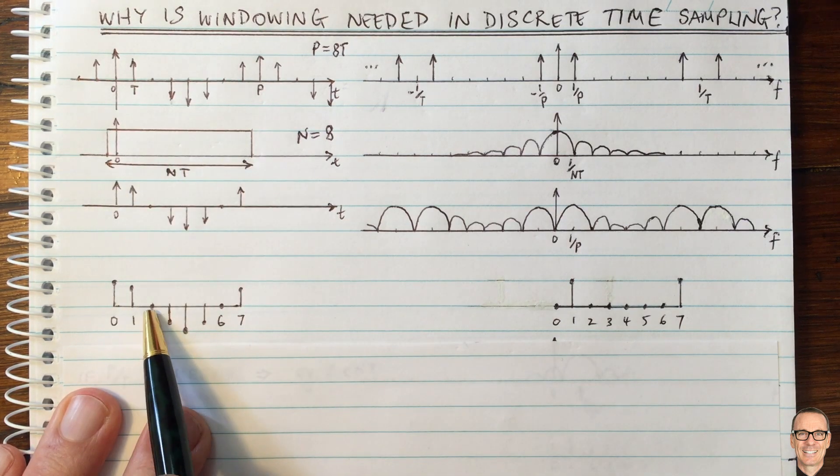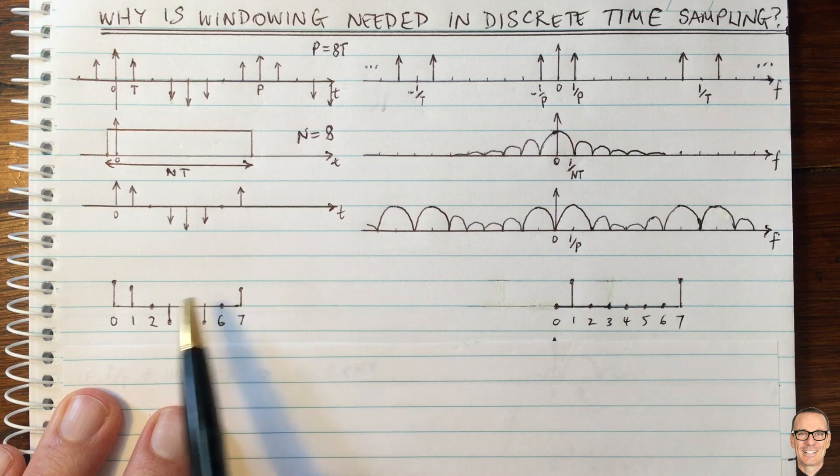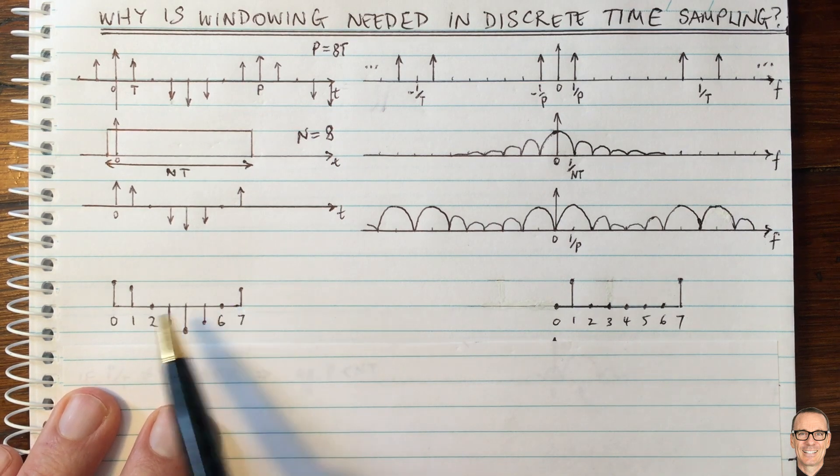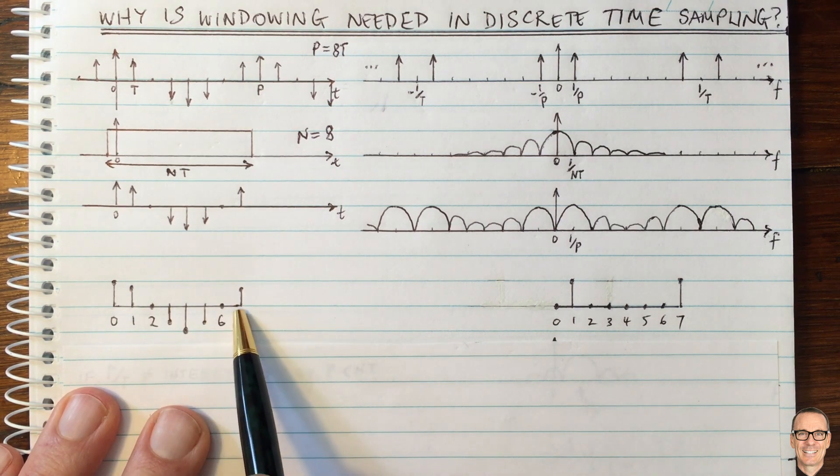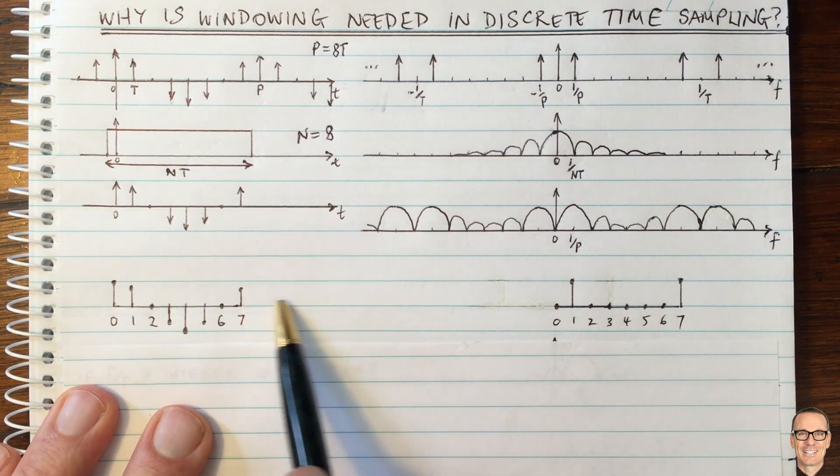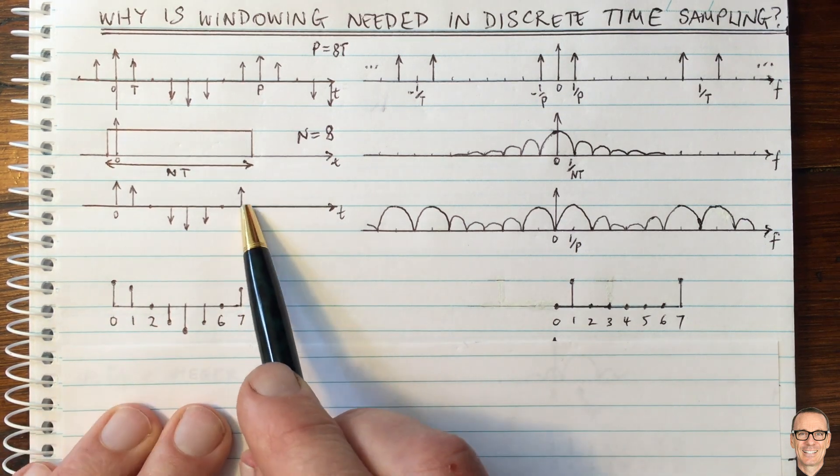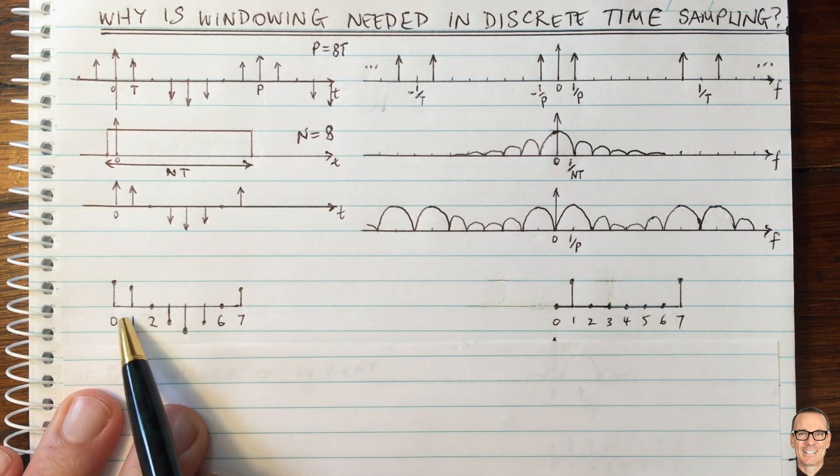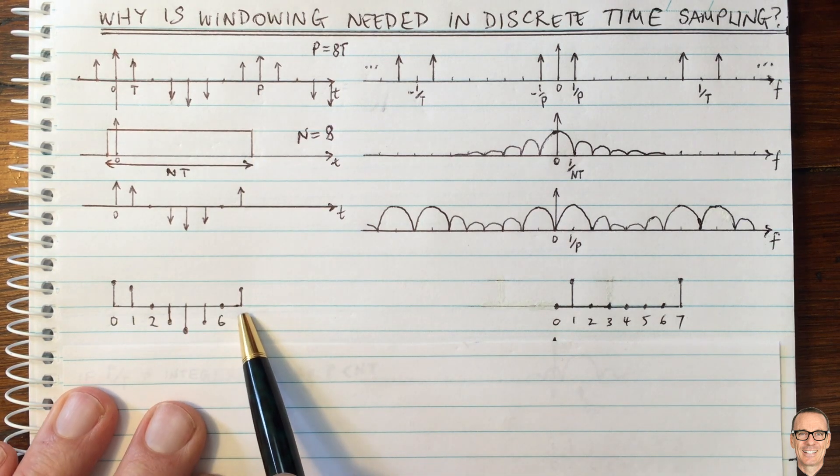They simply form a sequence of numbers, which we can write down in a numbered ordered list. There's nothing out here at negative time. There's nothing at any time bigger than the maximum of our window. We simply have, in this case, seven numbers.